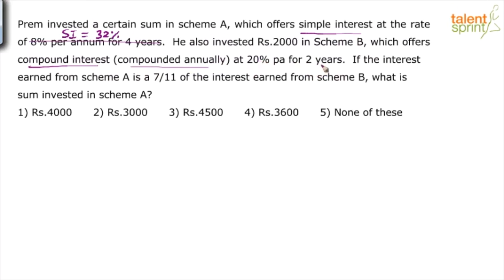Now again, if you had practiced enough, you would know that 20% per annum for two years in case of compound interest, which is compounded annually will give you a compound interest of 44%.